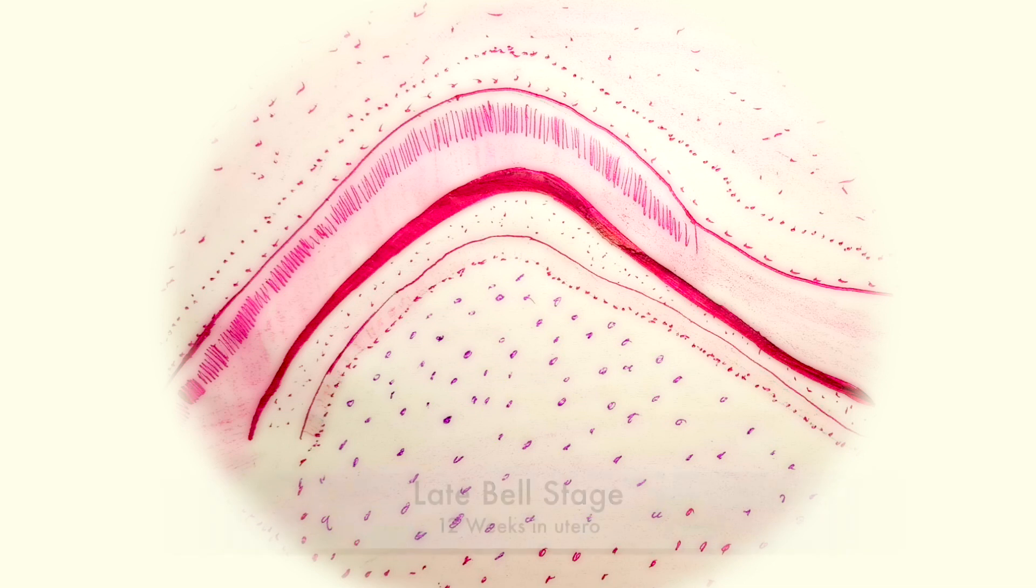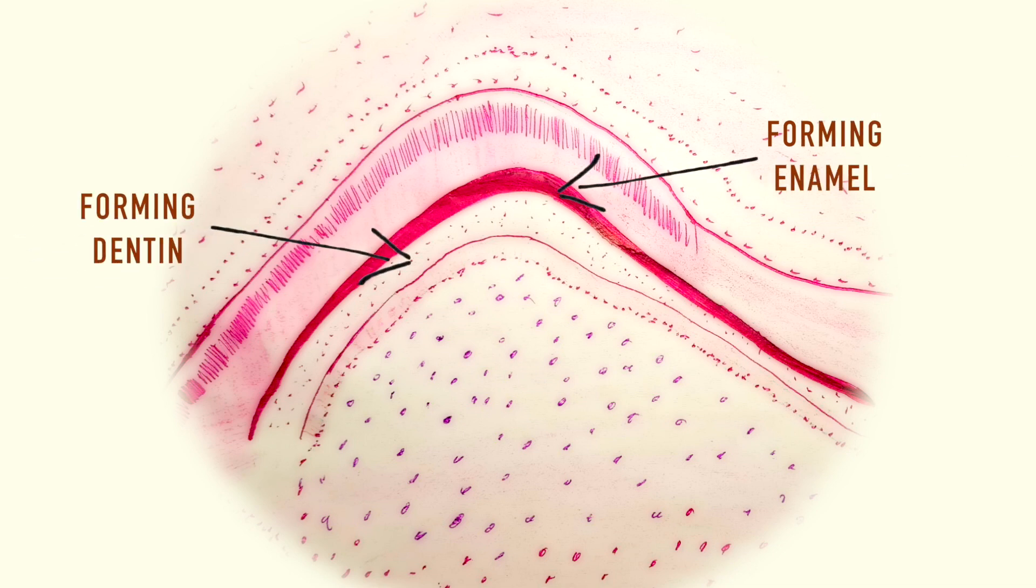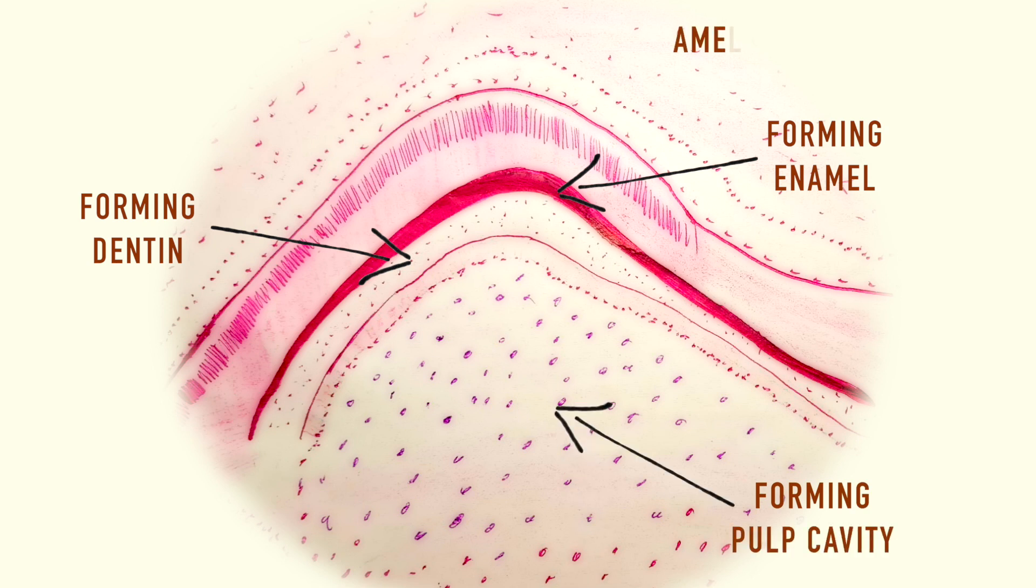Proceeding the early bell stage is the late bell stage. In this stage the formation of the shape of the tooth begins to take place through the development of the hard dental tissues such as enamel and dentin. The forming enamel, dentin, and pulp cavity become evident and ameloblasts and odontoblasts become more well defined.